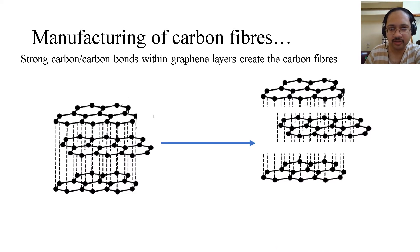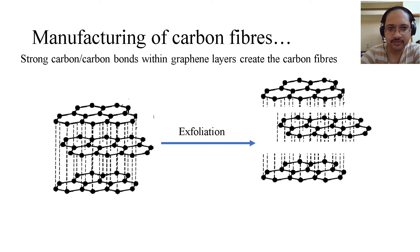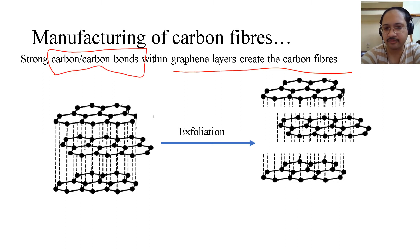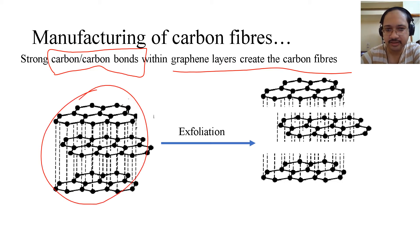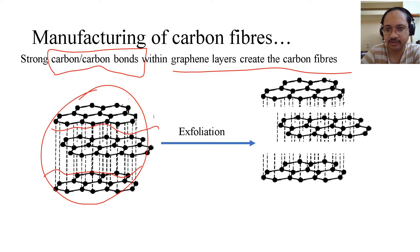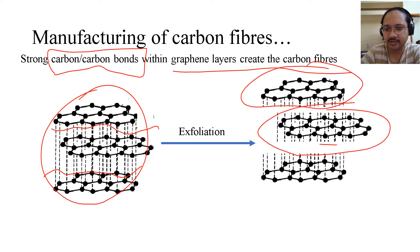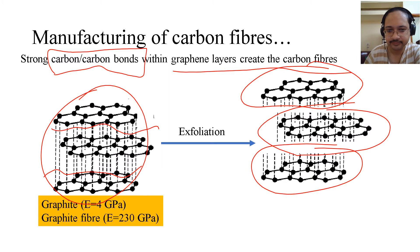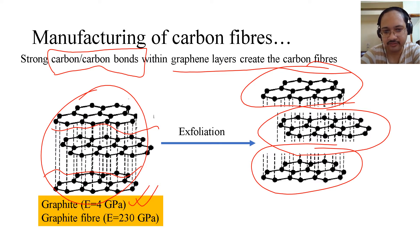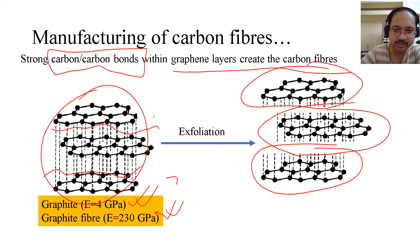Regarding graphite and graphene: strong carbon-carbon bonds within graphene layers create the structure of carbon fibers. In graphite, you remove the van der Waals bonds and exfoliate — taking out the layers, which are graphene sheets. Typically, graphite has a Young's modulus of 4 GPa, but when drawn into fibers, you get 230 GPa — a significant increase.